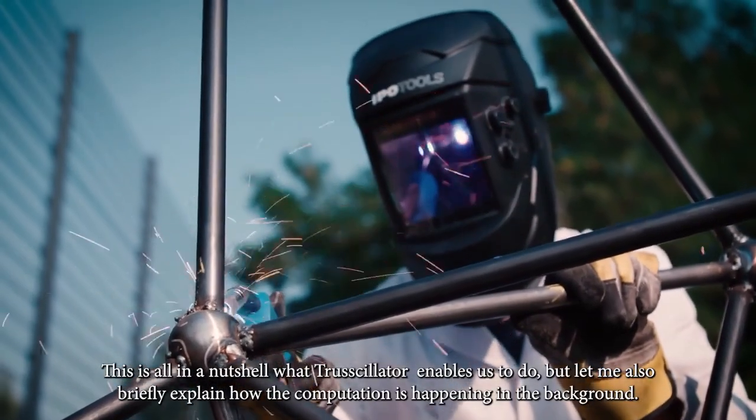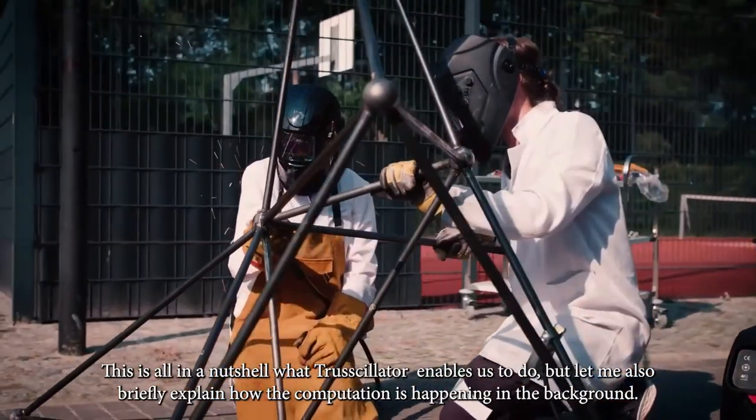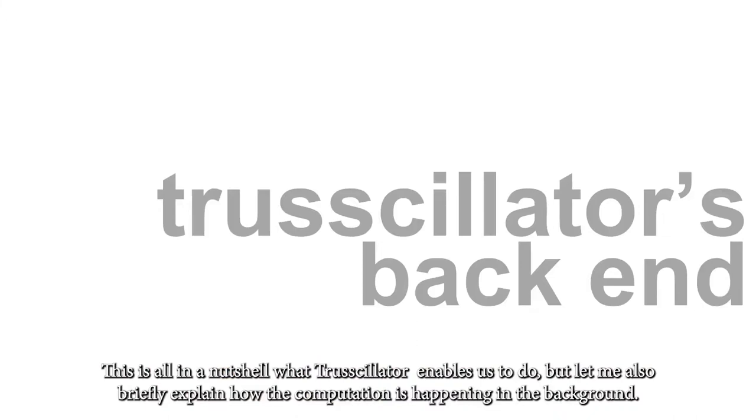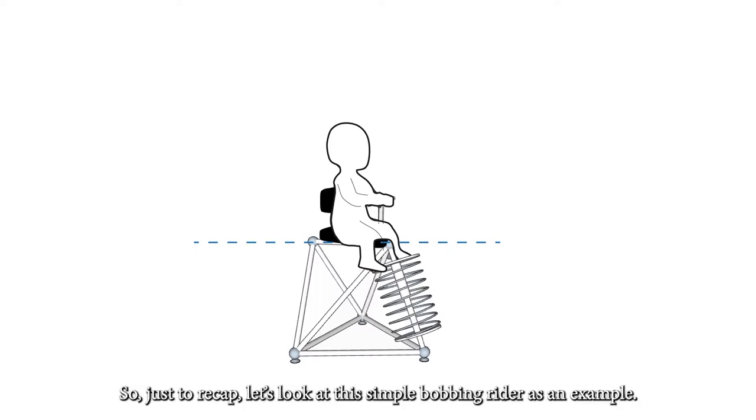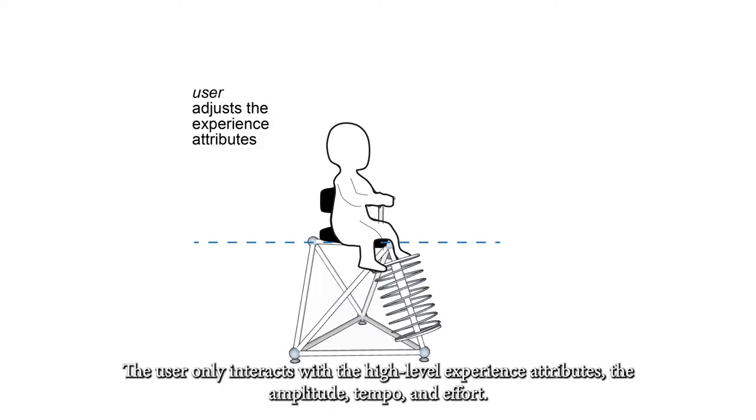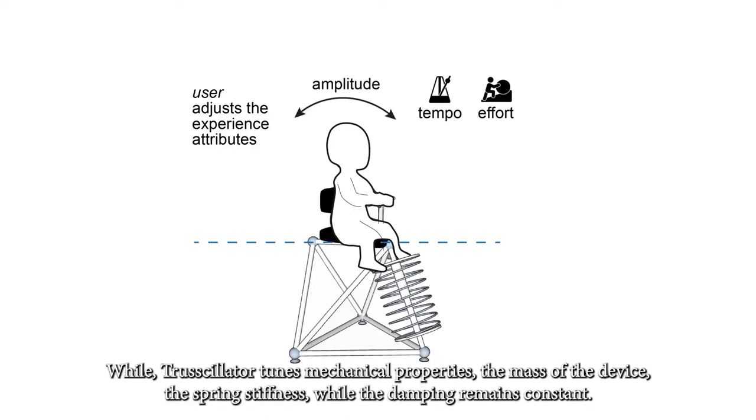This is all in a nutshell what Trussillator enables us to do, but let me also briefly explain how the computation is happening in the background. So, just to recap, let's look at this simple bopping rider example. The user only interacts with the high-level experience attributes, the amplitude, tempo and effort, while Trussillator tunes the mechanical properties of the device, the stiffness of the spring, the mass, while the damping remains constant.